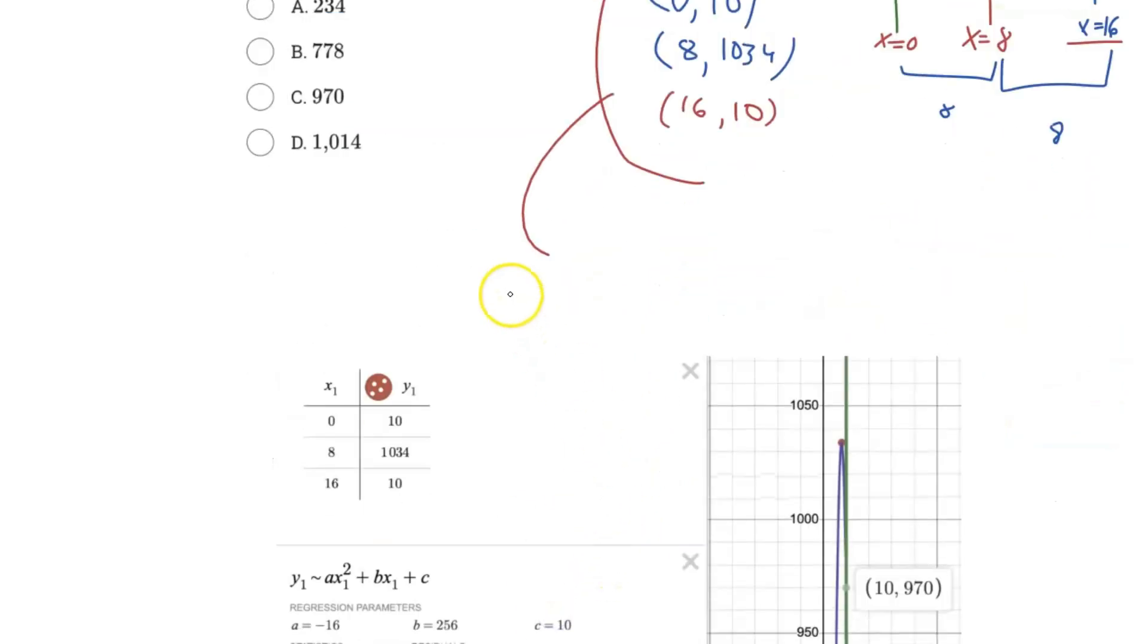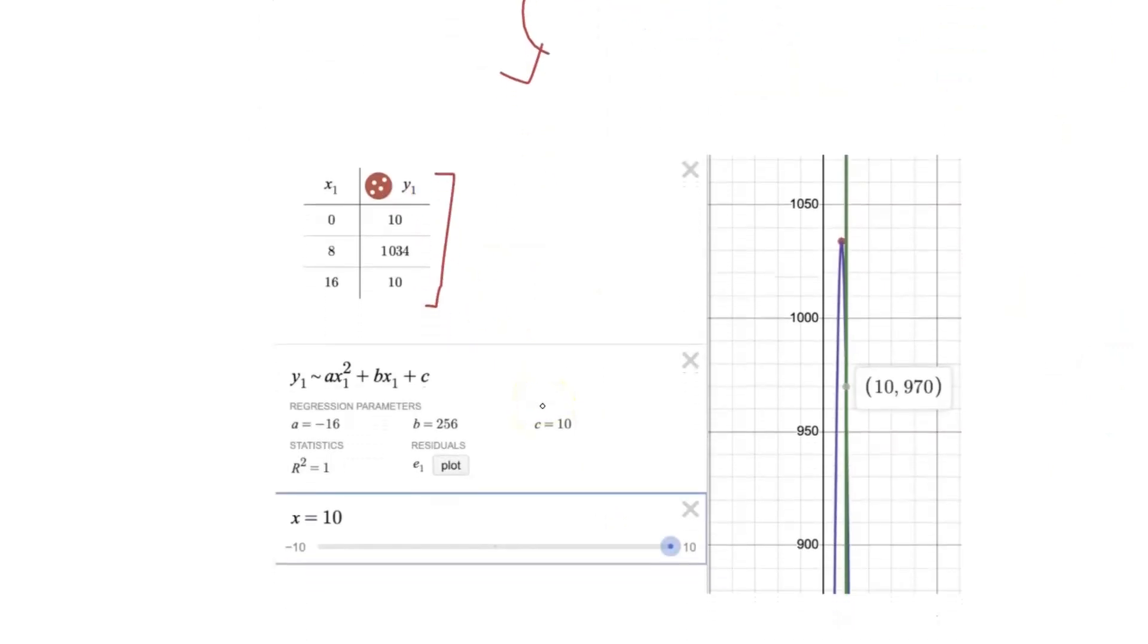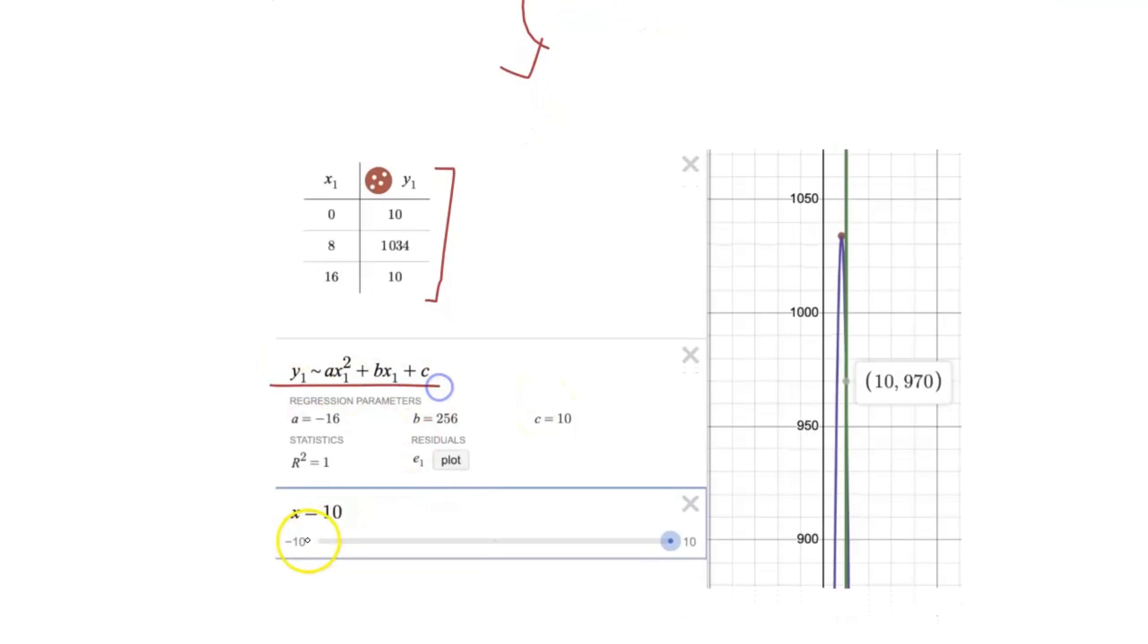And now we just plug this into Desmos. As you can see here, just a table with the points, and we put in our regression, and it gives us our graph, where it gives us the A, B, and C values.